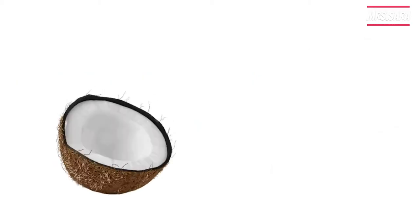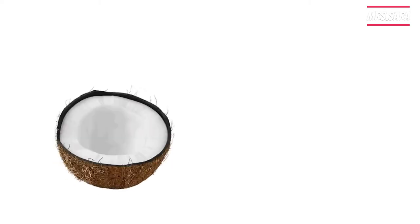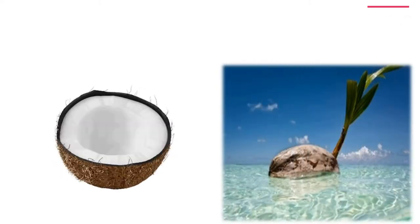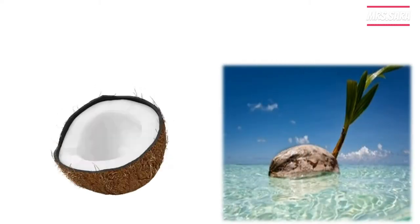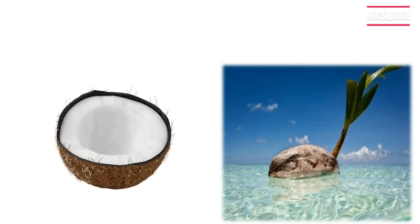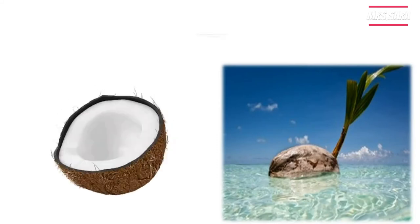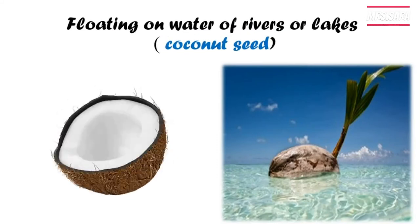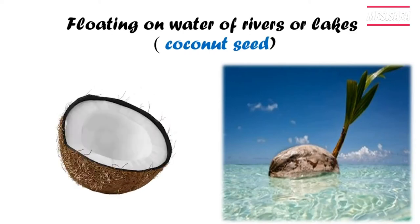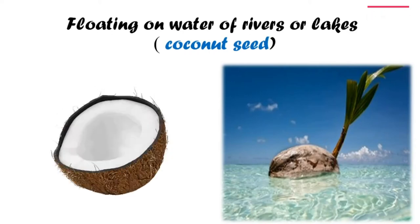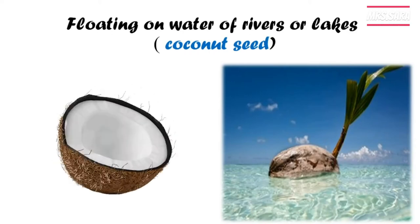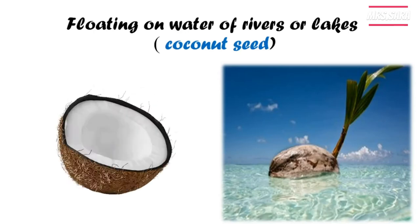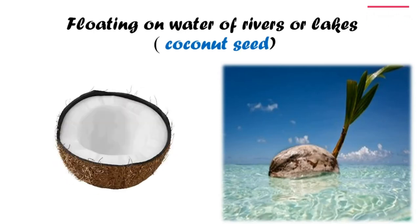As you can see, this is the coconut and this is the seed of the coconut. Can you see the seed on the water? So the first way of seed dispersal is floating on water of rivers or lakes, and our example is the coconut seed.